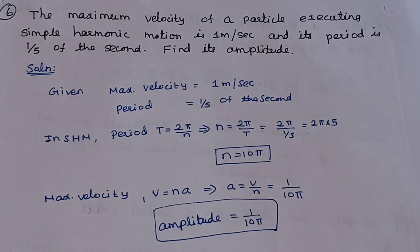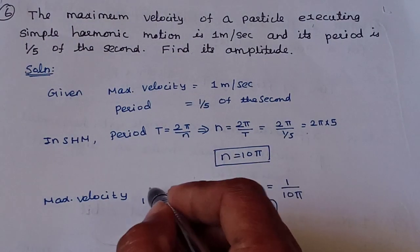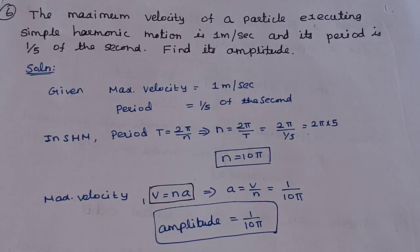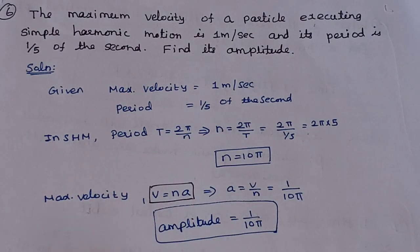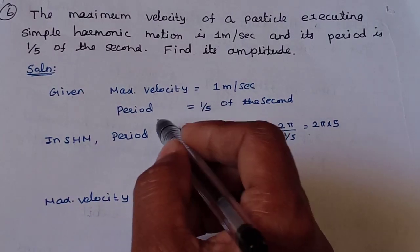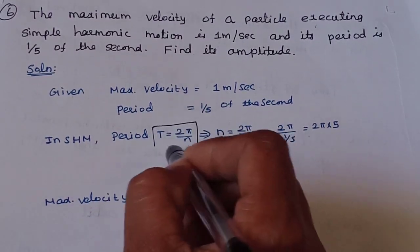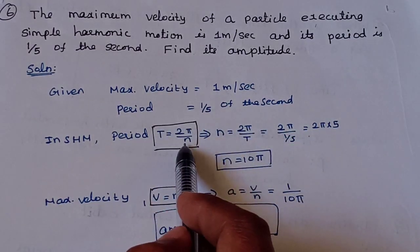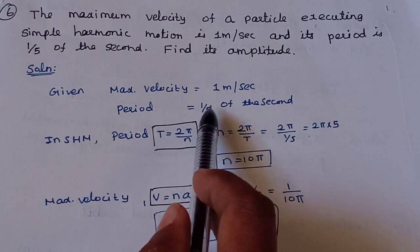The maximum velocity formula is V = n·A, where n is the angular frequency and A is the amplitude. The period formula for SHM is T = 2π/n, so n = 2π/T. With T = 1/5, n = 2π × 5 = 10π.